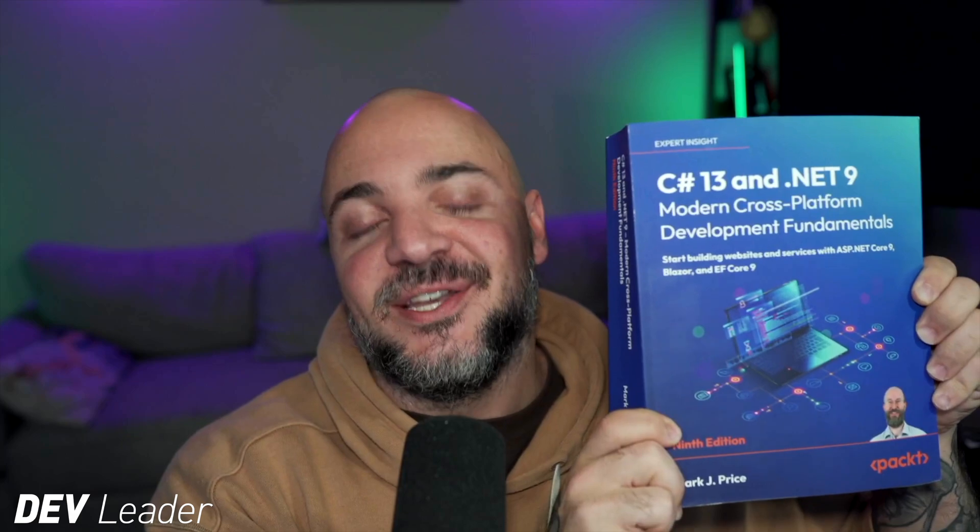This is a quick interruption from this video's sponsor, Packt Publishing. Packt has sent me this book from Mark J. Price — C# 13 .NET 9 Modern Cross-Platform Development Fundamentals. I have the previous edition on my bookshelf as well. This book is packed with tons of awesome examples that guide you through the different functionalities of the language. It's a great reference guide covering C# from the beginning, and also includes ASP.NET Core, Entity Framework, and Blazor with practical examples. You can check out the link in the description.